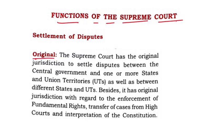In settlement of dispute, 'original' means the disputes which are directly coming to the Supreme Court. The Supreme Court has the original jurisdiction to settle disputes between the central government and one or more states and union territories, as well as between different states and union territories. If there is any dispute between center and any other state or between center and union territories or between different states, then the dispute is settled by the Supreme Court.